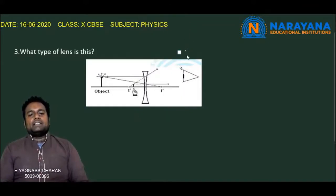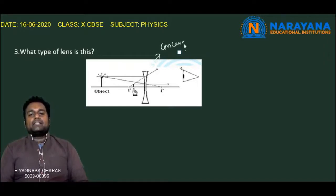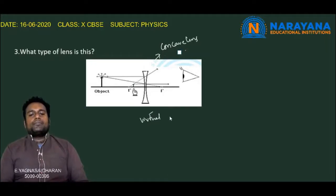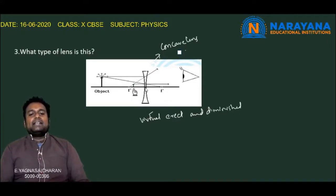The third question: What type of lens is this? In the given figure, the lens is thin at the center and thick at the edges, so we name this lens as a concave lens. The images formed by this concave lens are smaller than the object, and the images are always virtual, erect, and diminished.